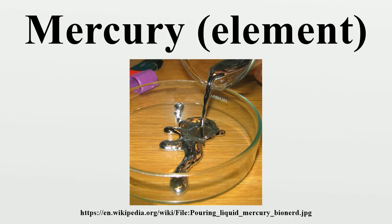Khumarawayh ibn Ahmad ibn Tulun, the second Tulunid ruler of Egypt, known for his extravagance and profligacy, reportedly built a basin filled with mercury on which he would lie on top of air-filled cushions and be rocked to sleep.